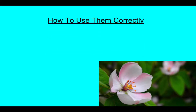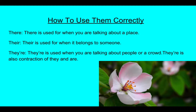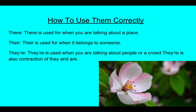How to use them correctly. There is used for when you are talking about a place, and that is T-H-E-R-E. Their is used for when it belongs to someone, and that is T-H-E-I-R. And they're is used for when you are talking about a group of people, and it is also a contraction — T-H-E-Y apostrophe-R-E.